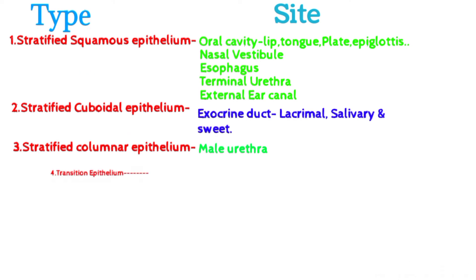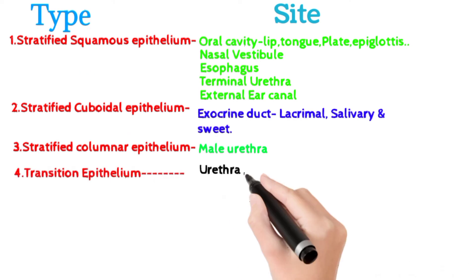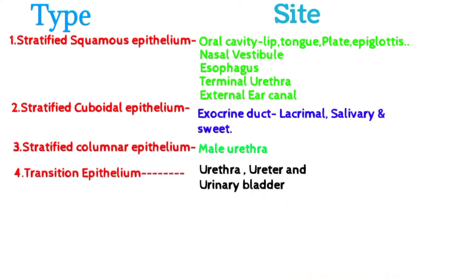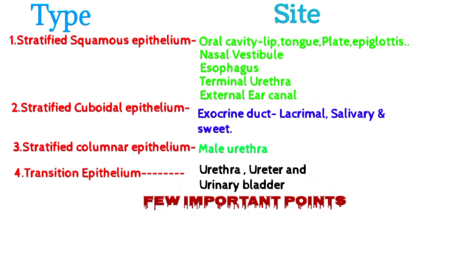Transitional epithelium is present in the urethra, ureter, and urinary bladder. It is also known as urothelium because it is present in the urinary system. It helps in protection and distension.